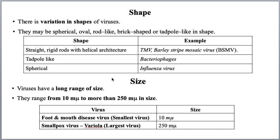Now let us take size. Viruses also vary greatly in size, ranging from 10 mu microns to 250 mu microns. For example, foot and mouth disease virus — which causes foot and mouth infections — is the smallest virus, only 10 mu microns. Smallpox virus, also called variola virus, is the largest virus at 250 mu microns.